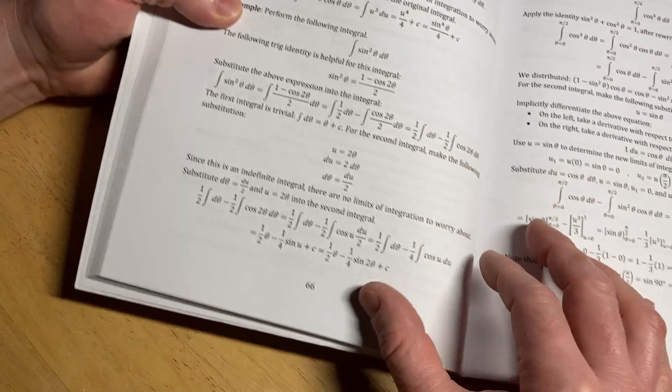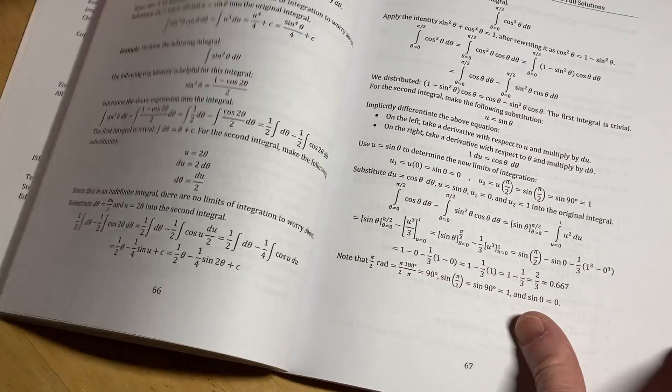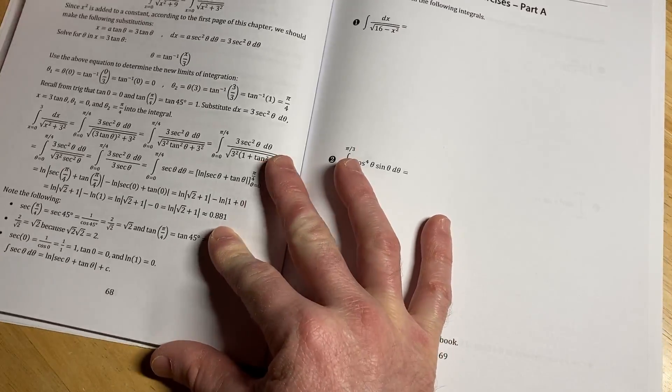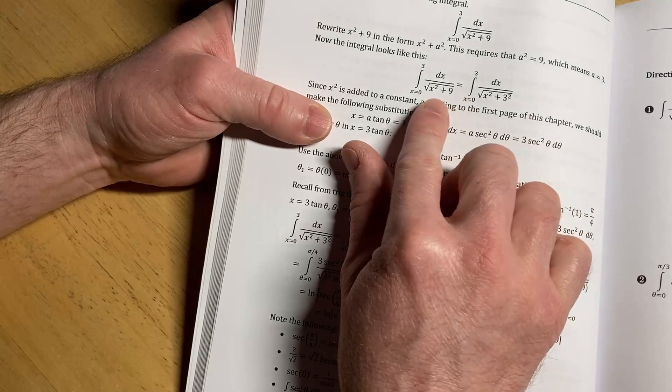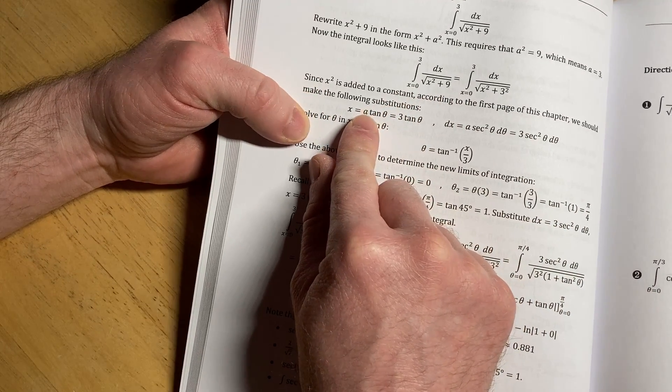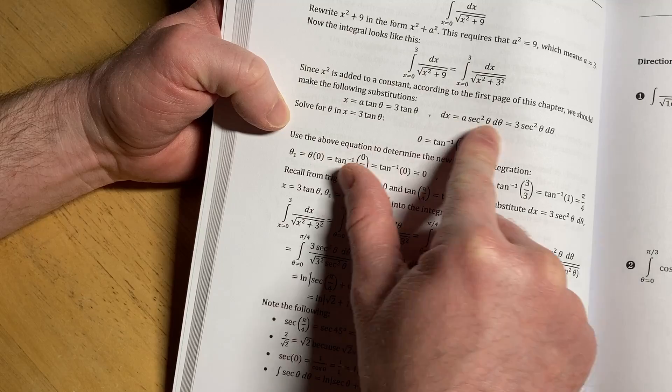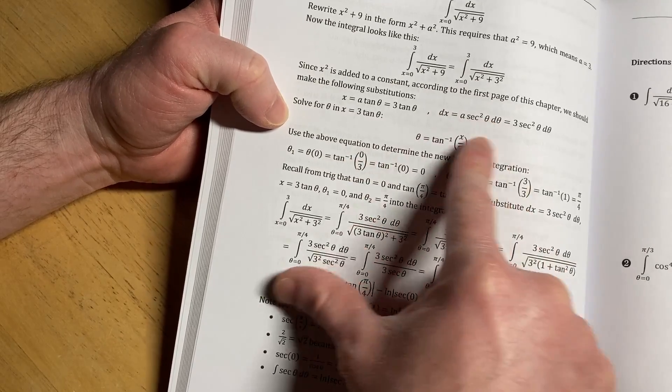And so he's got some really good examples and he goes through everything here. And then here we go. Here's a really good example of a trig substitution. Here he lets x equal 3 tan theta and finds dx and then goes from there.